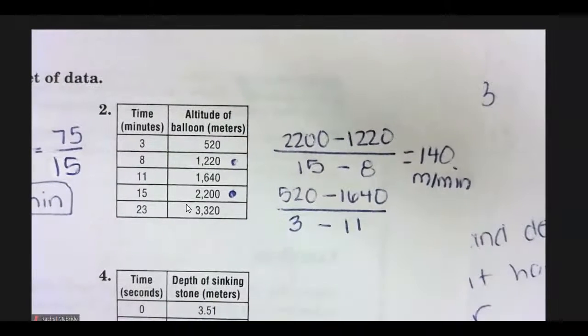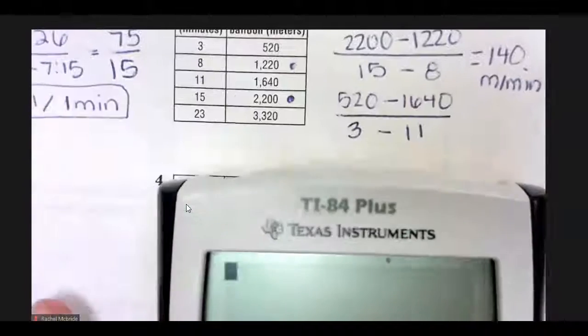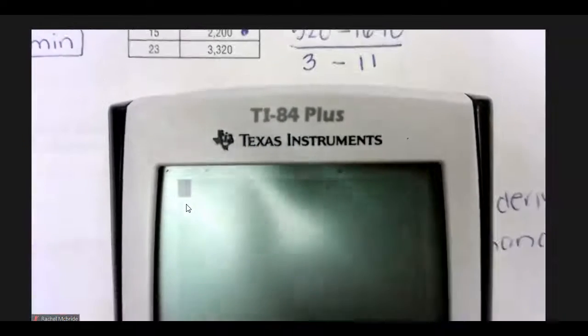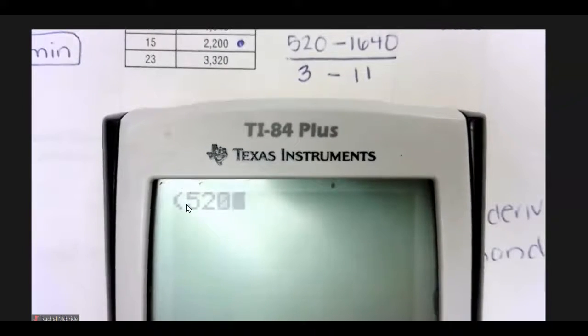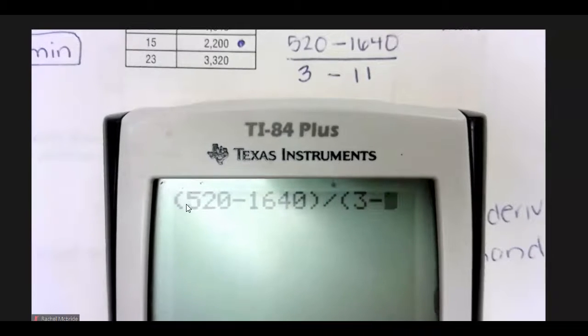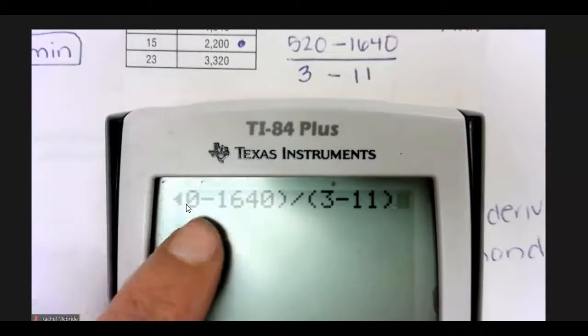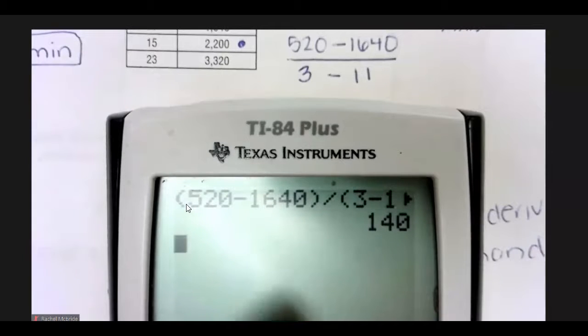So, here, if you did that on your calculator, just so you could see how it's typed. You would want to do parentheses, 520 minus 1640, close parentheses, divided by 3 minus 11. So, your top's in parentheses, your bottom is in parentheses. And once again, I get 140.